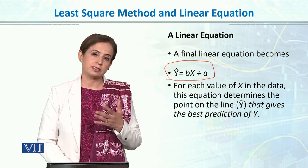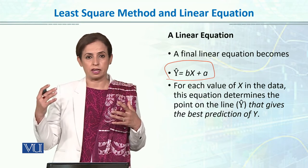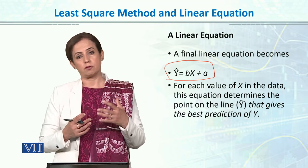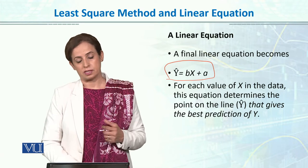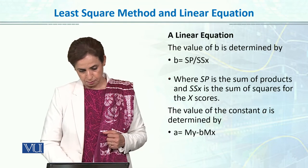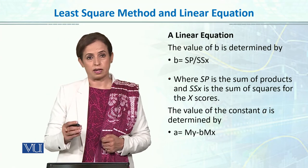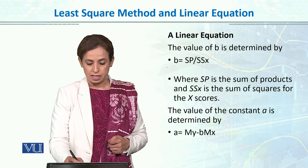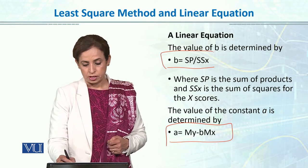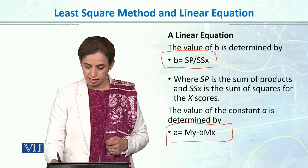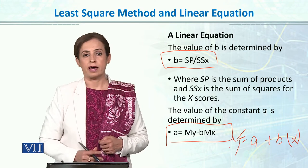In SPSS you can simply do this with just one click, but it is important to understand the philosophy of regression — how we draw the line of best fit and how we calculate the prediction. So in the linear equation, when we manually find out, we have to find out B and A. Once we have these two values, we can simply plug in any x value to get the predicted y value.